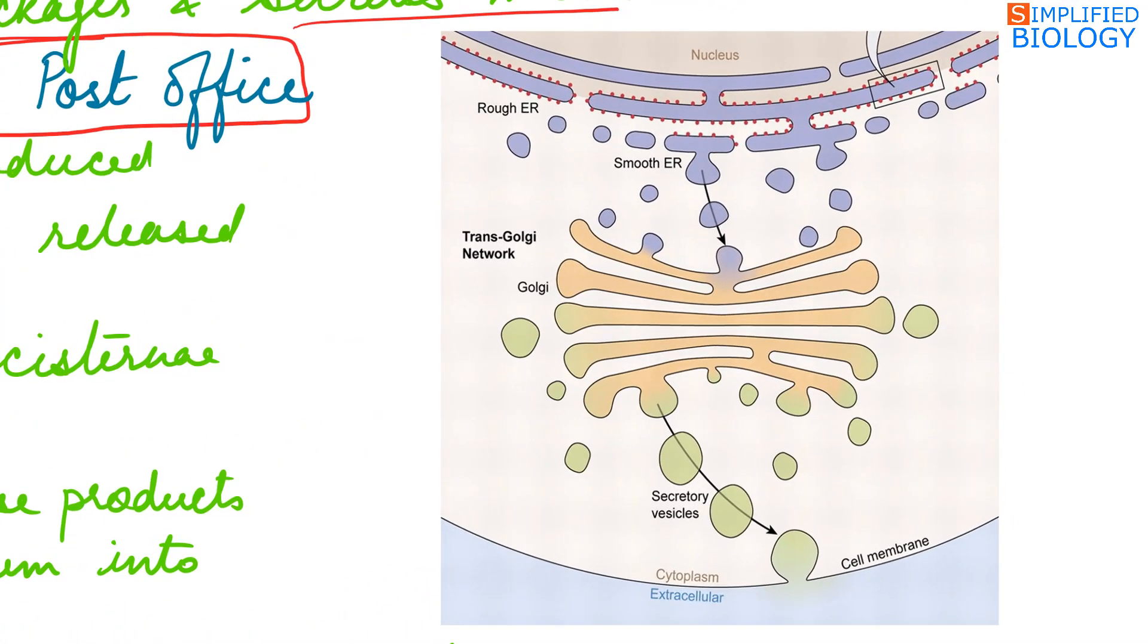Proteins and lipids formed by the smooth endoplasmic reticulum and the rough endoplasmic reticulum are released as vesicles. These vesicles fuse with the cisternae to form the Golgi complex. Inside the Golgi complex these proteins and lipids get modified.